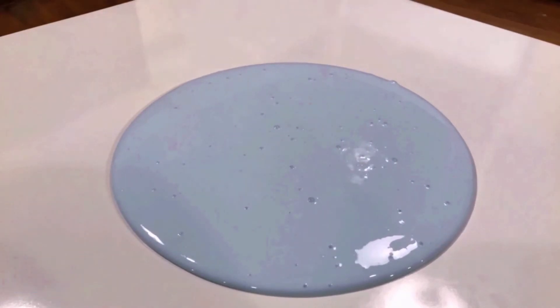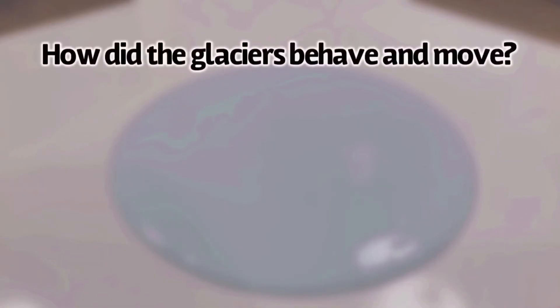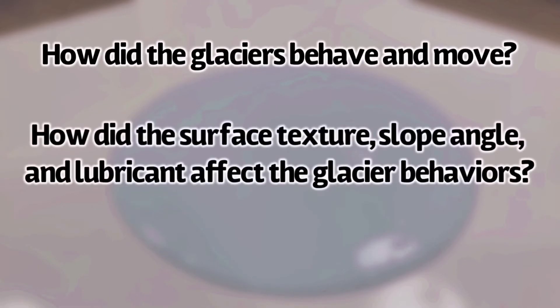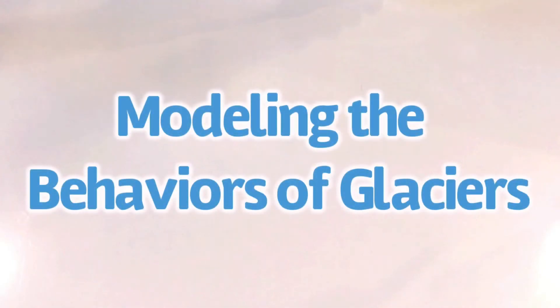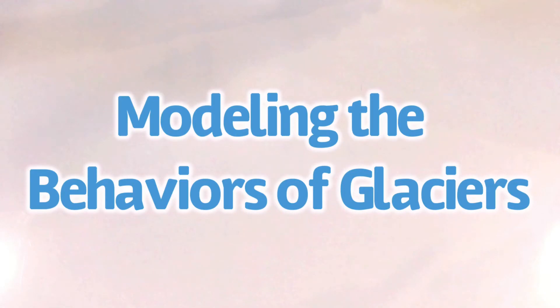Thus concludes all of the observations and experimental comparisons we'll explore in this video. Take a moment to review how the glaciers behaved and moved. Also reflect upon the ways that the surface texture, slope angle, and lubricant affected the glacier's behaviors. We'll also consider the effects of accumulating and melting ice in glaciers, and how these processes influence them on a large scale.